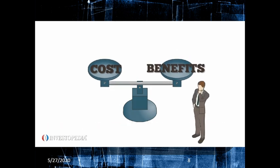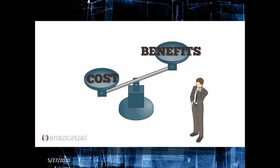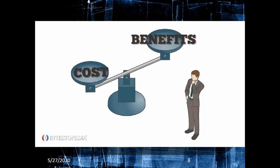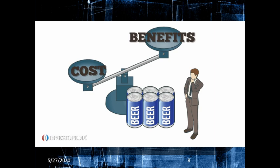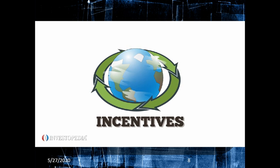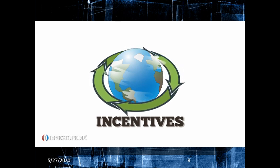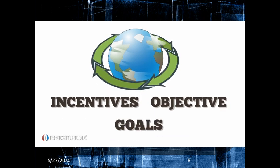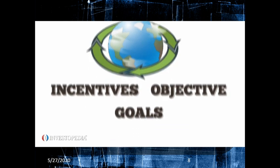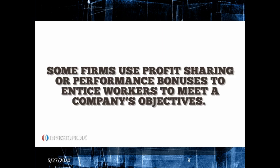People are likely to make choices that provide the most benefit with the least cost. A consumer will buy the best beer she can afford, not necessarily the best beer in the store. Incentives make the world go round. Frequently, when things go wrong, it's because the incentives weren't aligned with the objective. When incentives and goals are lined up, the benefits can be tremendous. Some firms use profit-sharing or performance bonuses to entice workers to meet a company's objectives.